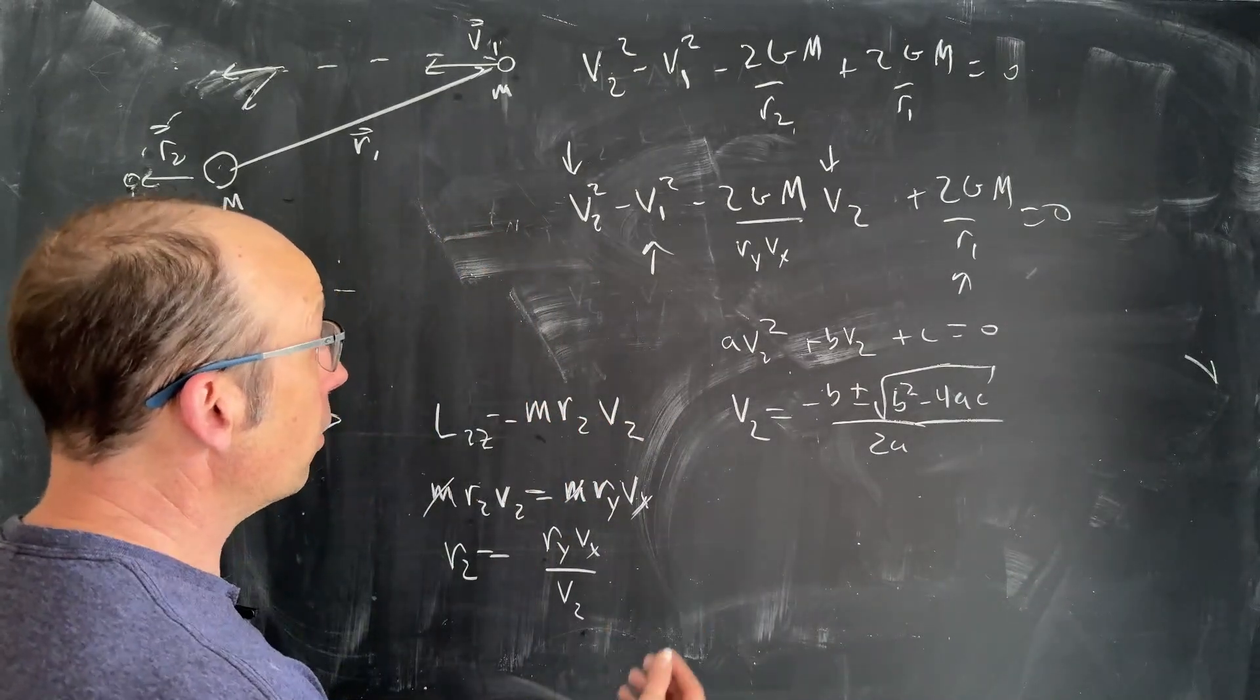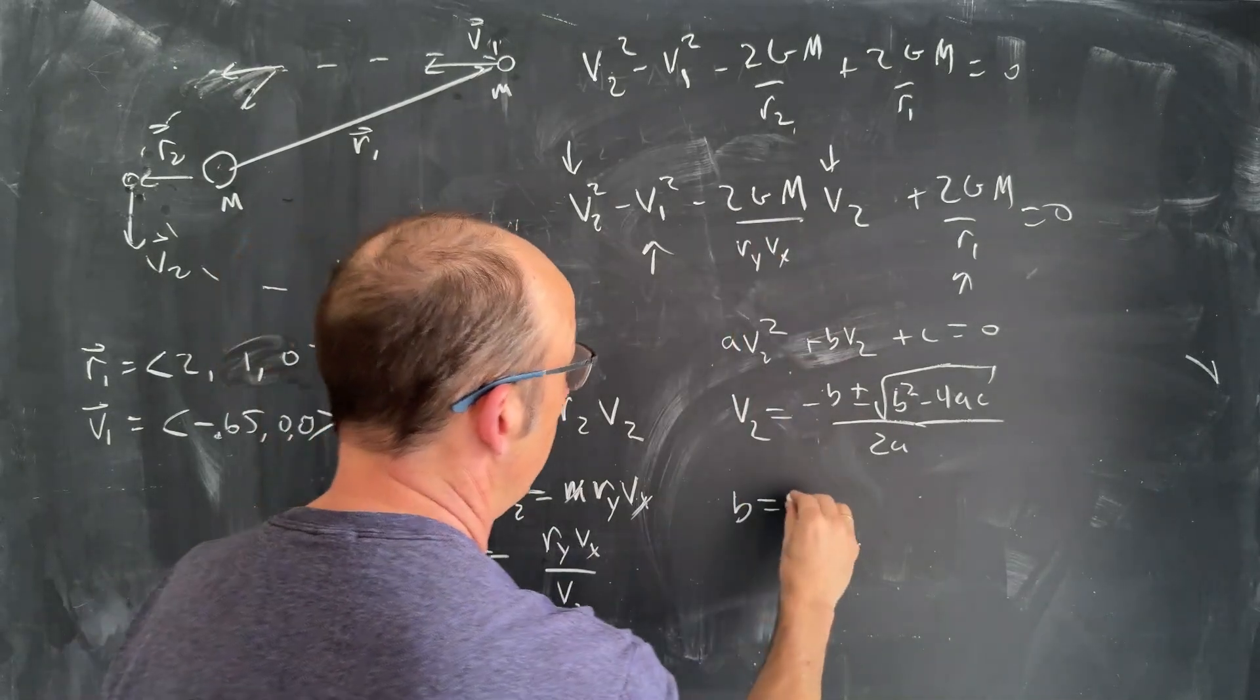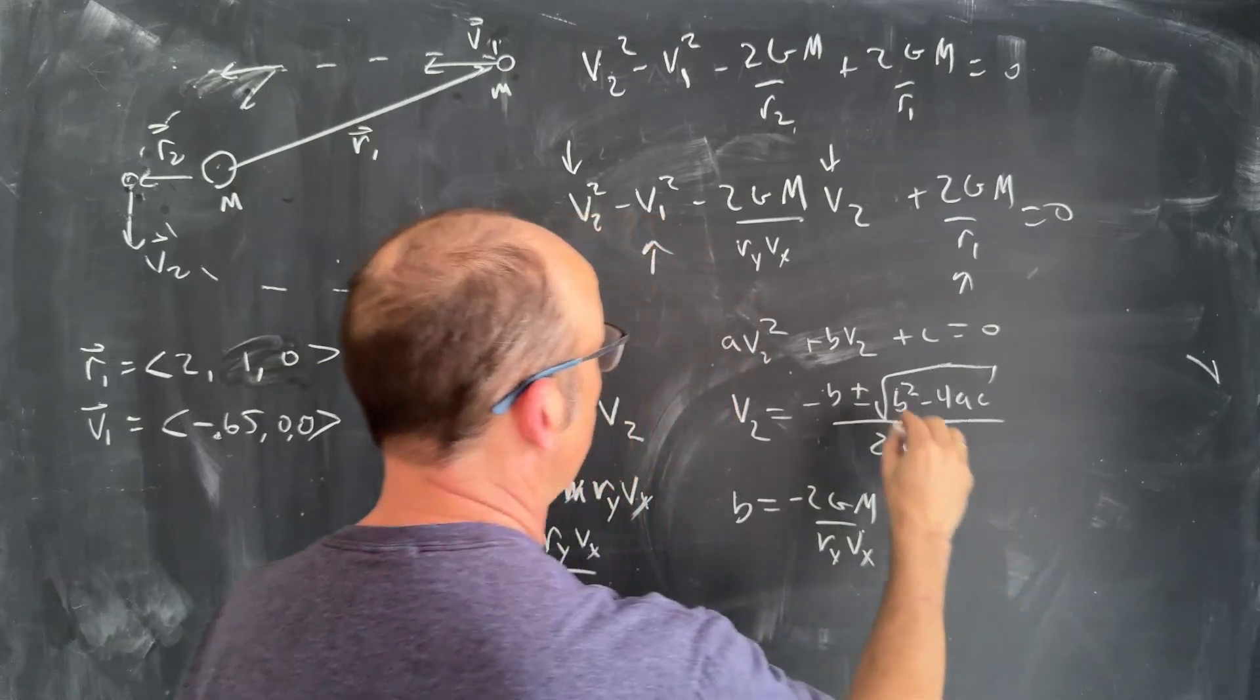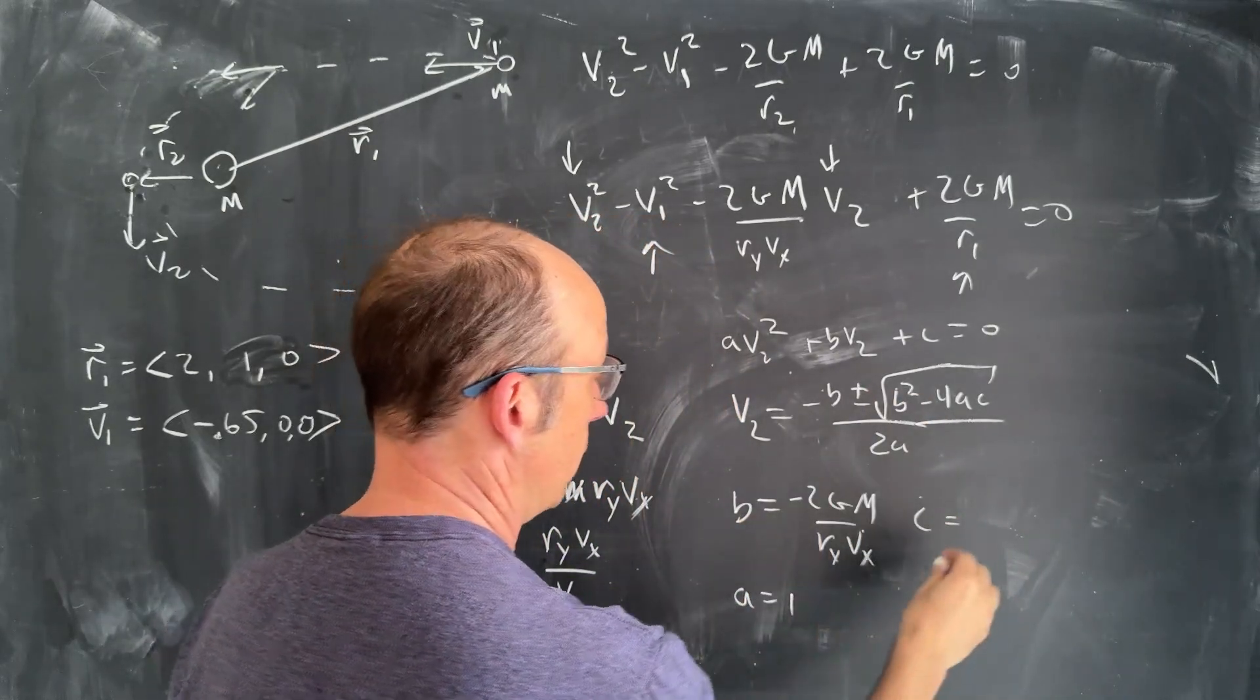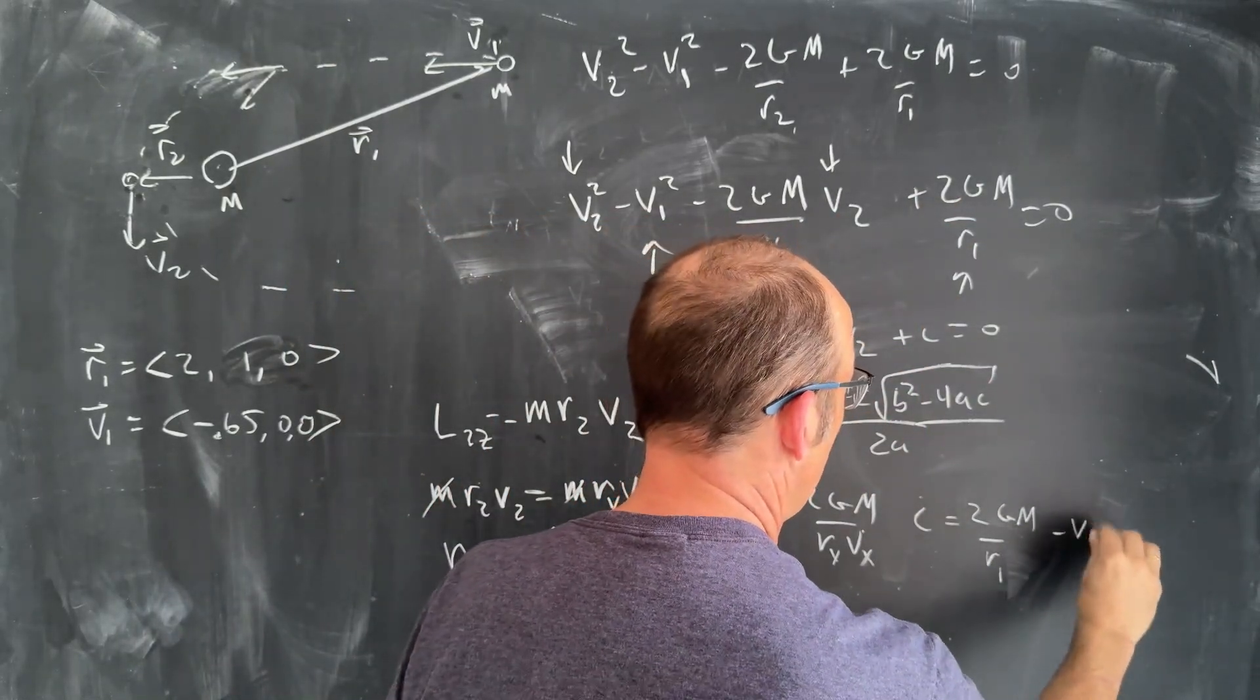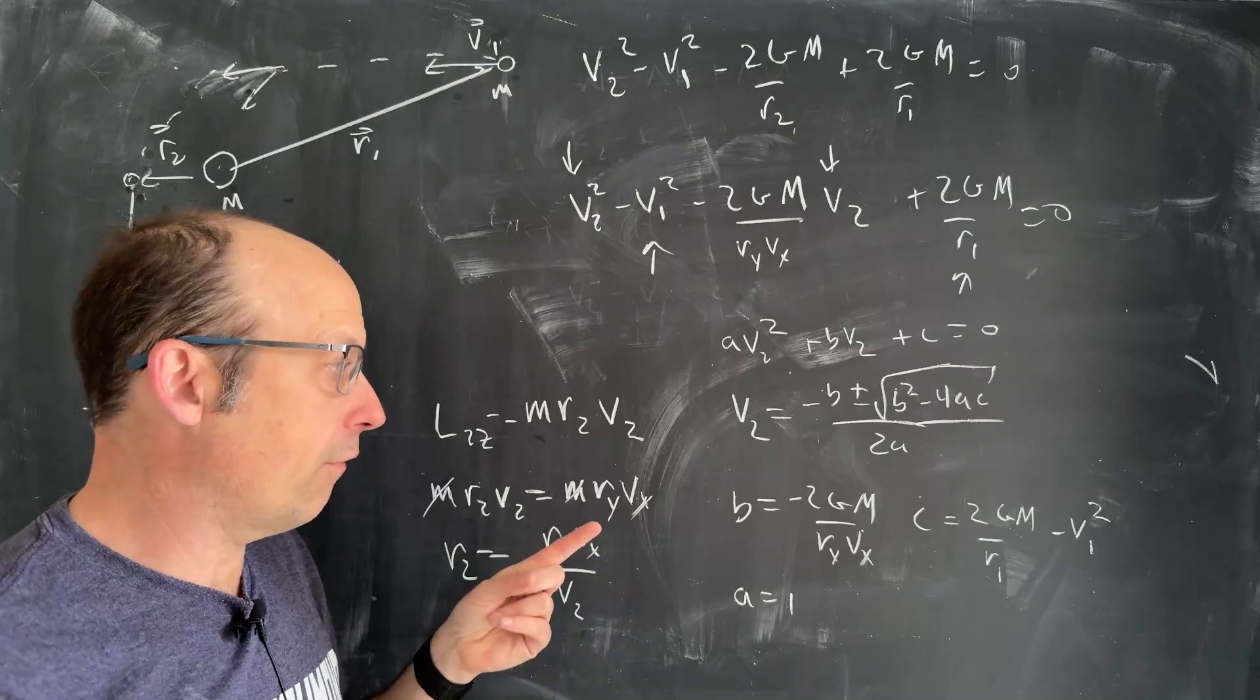So if I write this as A V2 squared plus B V2 plus C equals 0, then V2 is negative B plus or minus the square root of B squared minus 4AC over 2A. And you may be thinking, wait, I thought we were never going to actually use the quadratic equation. Well, you know that's not true. So here, let's just write down our expression. B is equal to this, -2Gm/(R_y V_x). C is equal to, well, A. I didn't do A. A is 1. C is equal to 2Gm/R1 minus V1 squared, and that's the magnitude.